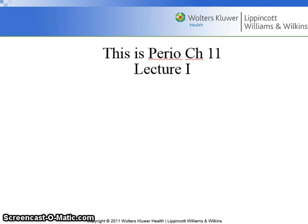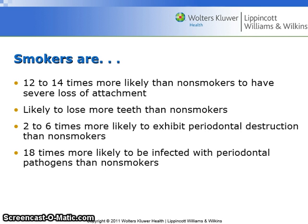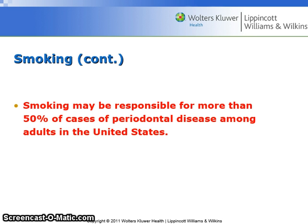Hello students, this is Perio Chapter 11, Lecture 1. Smokers are 12 to 14 times more likely than non-smokers to have severe loss of attachment. They are likely to lose more teeth than non-smokers, 2 to 6 times more likely to exhibit periodontal destruction, and 18 times more likely to be infected with periodontal pathogens. Smoking may be responsible for more than 50% of cases of periodontal disease among adults in the United States.